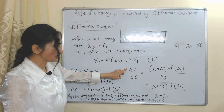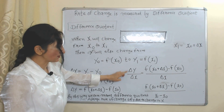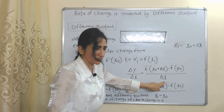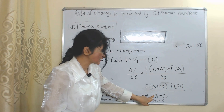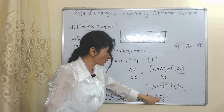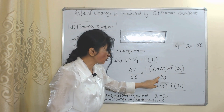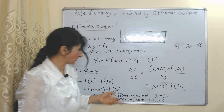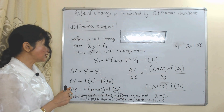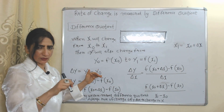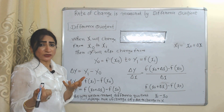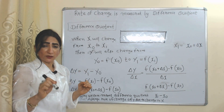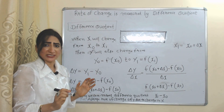Rate of change equals delta y over delta x. Since delta x equals x1 minus x-naught, we can also write the formula as f(x-naught + delta x) minus f(x-naught), all over x1 minus x-naught. This represents the difference quotient, which mainly shows the average rate of change in y due to change in x.